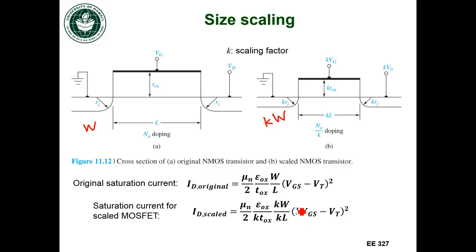The gate voltage scales, so VGS will have a K in front of it. Threshold voltage doesn't scale, so there's no K in front of it there. So if we just take out all the K's, so here's the K for the width, multiplied by K squared from the K in front of VGS, and we're dividing by the K from the T-ox times the K from the length.